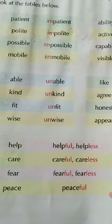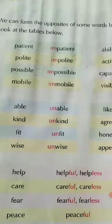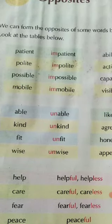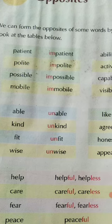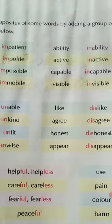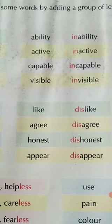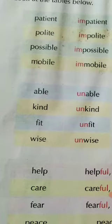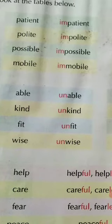By adding these letters, the meaning becomes different — completely opposite. For example: patient/impatient, polite/impolite, possible/impossible, mobile/immobile. With the prefix 'in-': inability, active/inactive, capable/incapable, visible/invisible. With 'un-': able/unable, kind/unkind, fit/unfit, wise/unwise. This is how we form opposites — like 'saksham/asaksham' in Hindi.